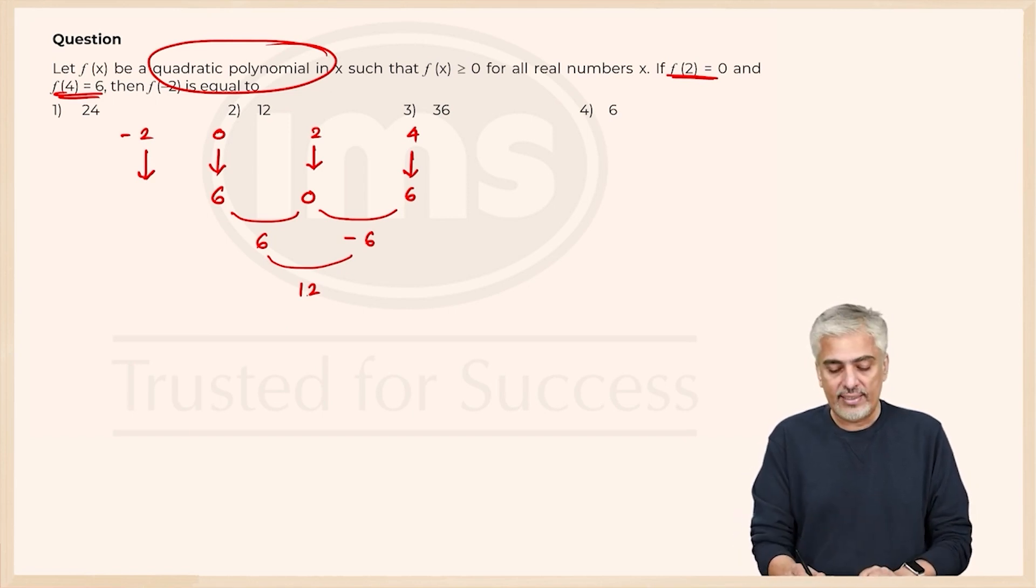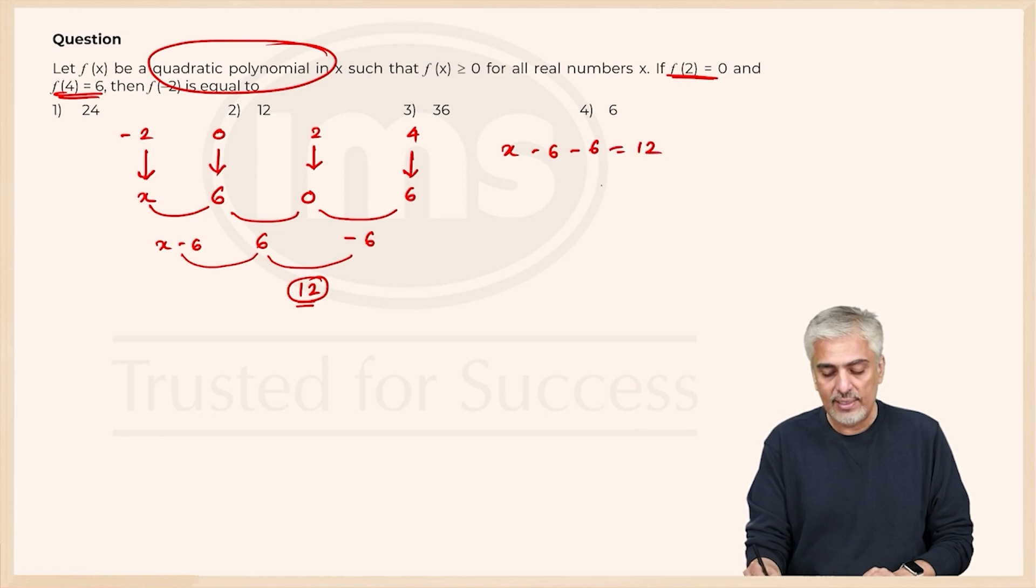Now that is the whole idea. This difference should remain 12 every single time. So whatever value, suppose if I take this value as x which I want to find. Now so this will be x minus 6. And the difference between these two should be 12. So according to what we know it should be x minus 6 minus 6 should be 12 and therefore x will be 24.